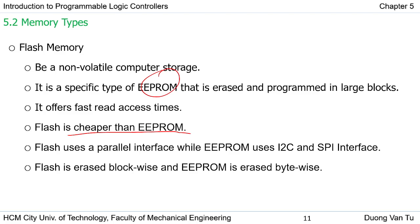For communication between flash memory and external devices, we can use a parallel interface, which offers faster communication speed compared to the I2C and SPI interfaces of EEPROM. In the PLC, flash memory erases block-wise while EEPROM erases byte-wise, so flash memory offers faster speed for reading, writing, and erasing data.